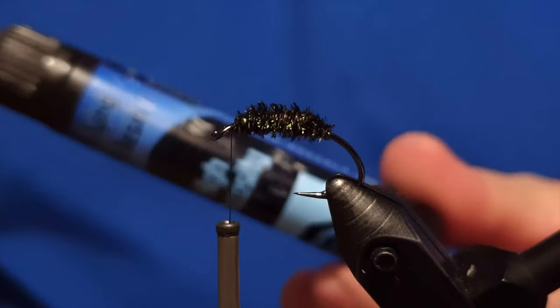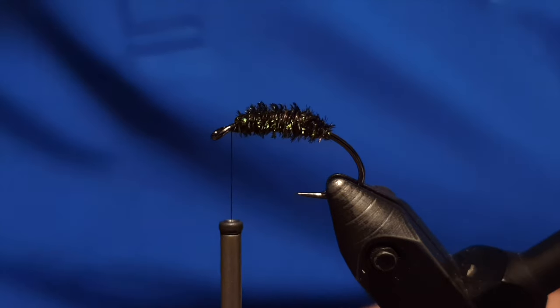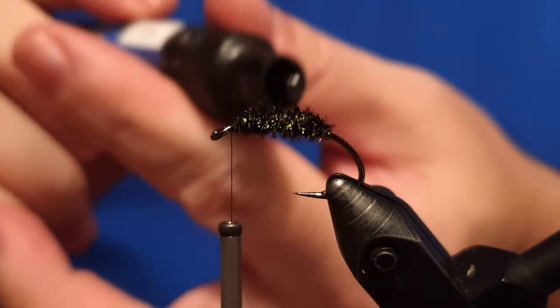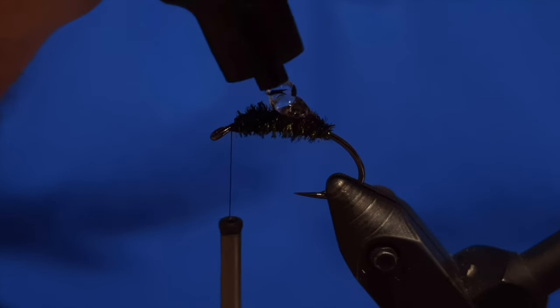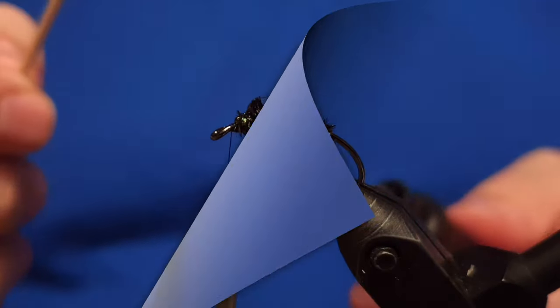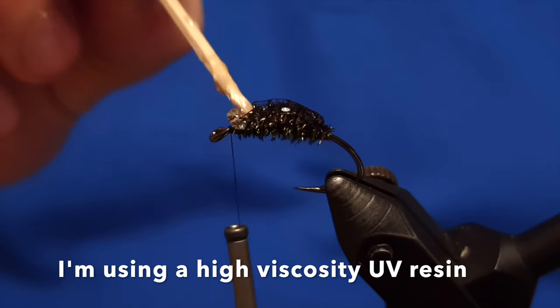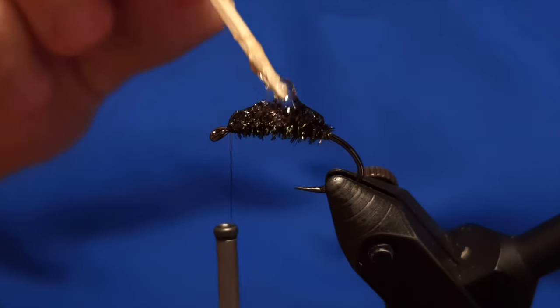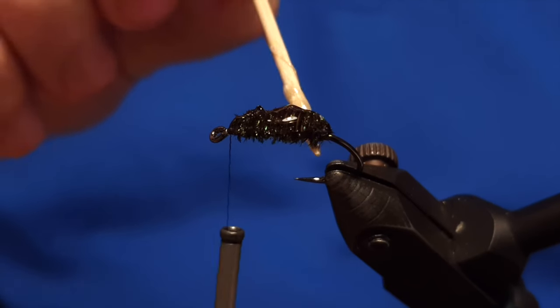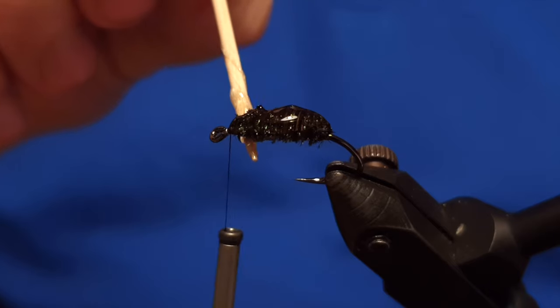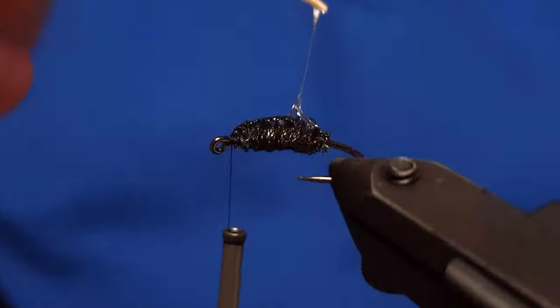Now we will take the UV resin. The UV resin I'm using for this fly is high viscosity, simply because it's easier to work with when you're building a body of a fly like this. Much better to use the high viscosity. Low or medium viscosity UV resin is better for some other work.